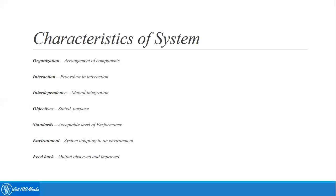To recap: organization is the arrangement of components; interaction is how subcomponents and subsystems communicate; interdependence is how they depend on one another for functionality; objectives deal with the core purpose of the system; standards refer to acceptable levels of performance; environment covers how surrounding aspects are taken into consideration; and feedback is for continuous improvement.